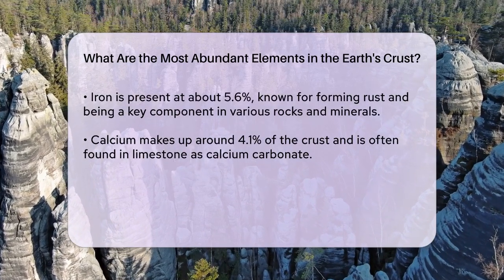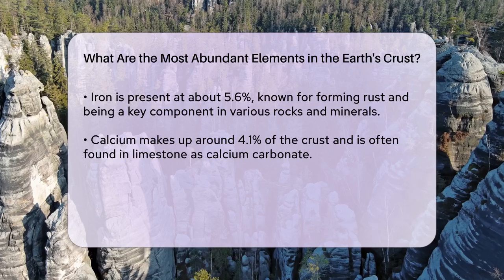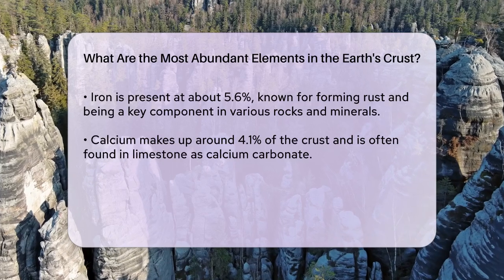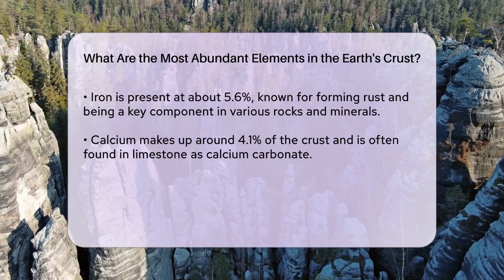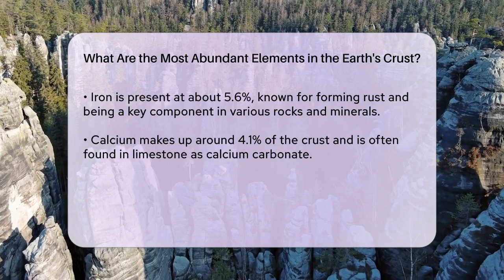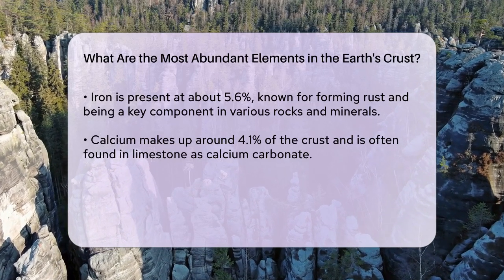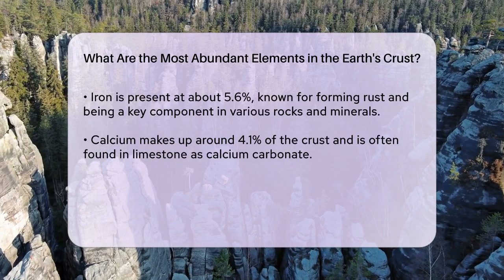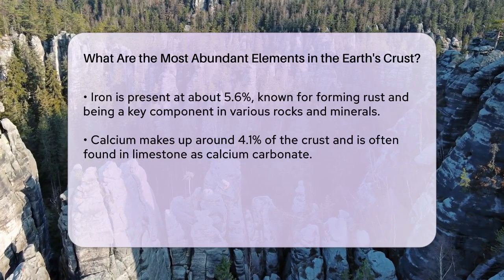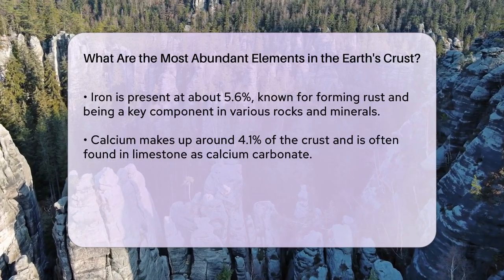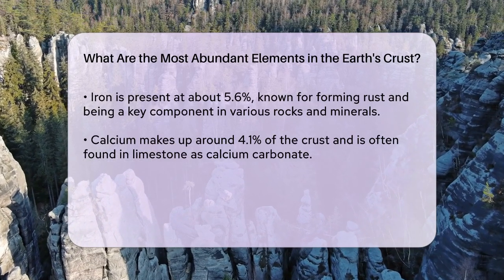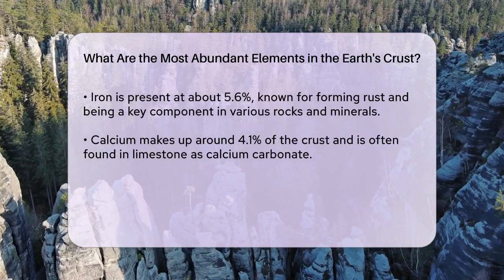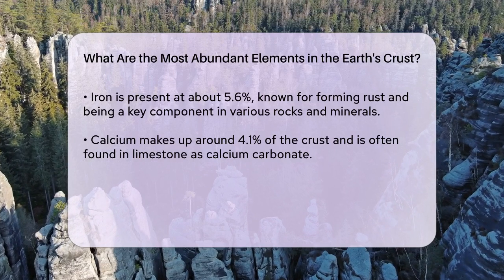Other significant elements include sodium, magnesium, and potassium, each making up around 2–3% of the Earth's crust. These elements are often found in combination with other elements, forming various minerals.